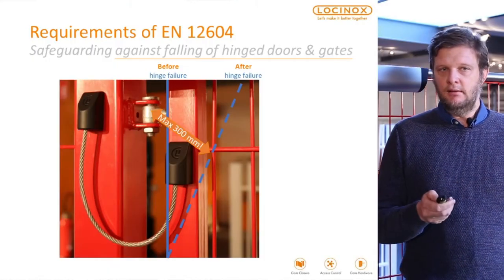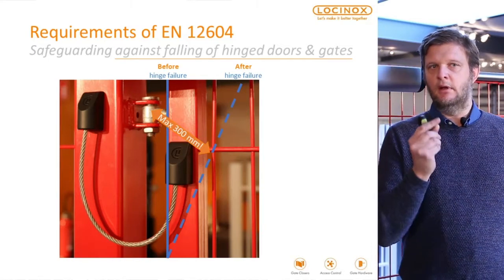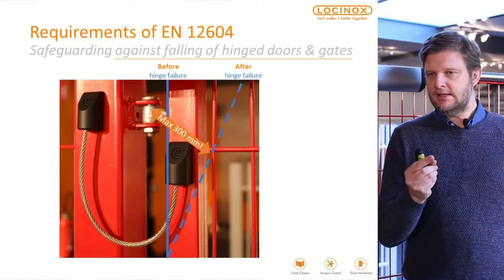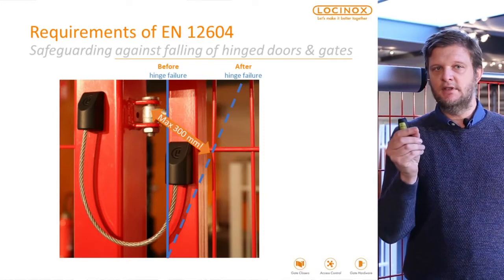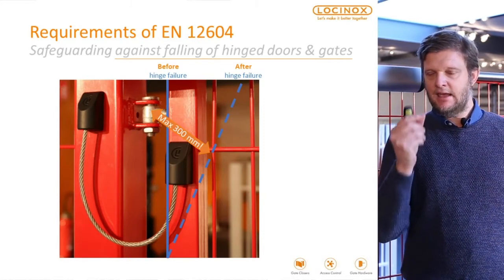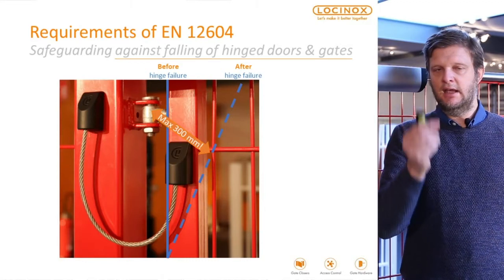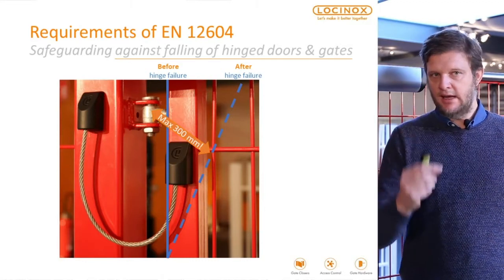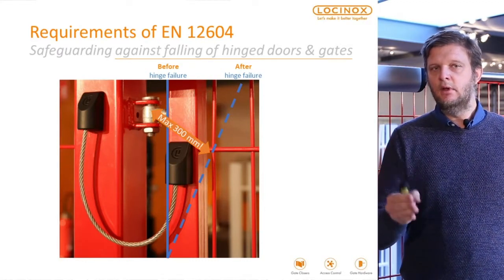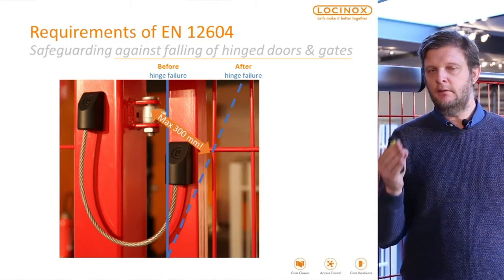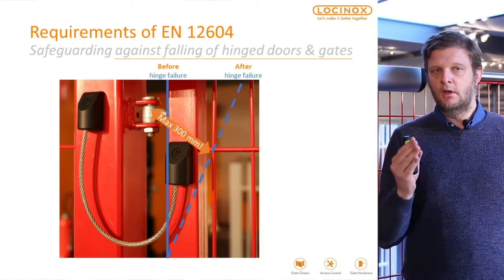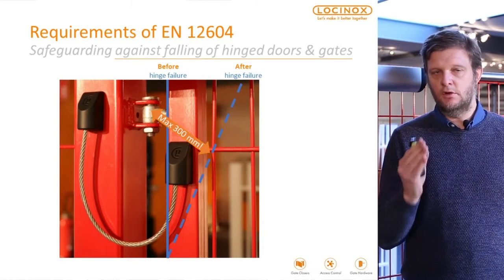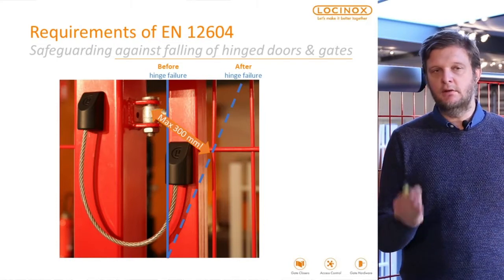Here you have the rotation axis — that is the hinge versus the gate. So in case the gate or the hinge breaks, the displacement should not be more than 300 mm. For that of course you have to have good solutions, and we can offer you these good solutions.